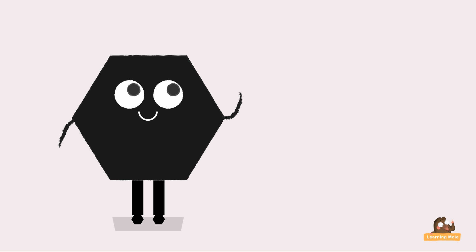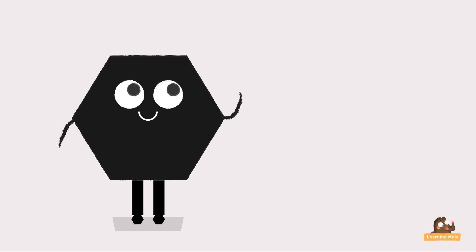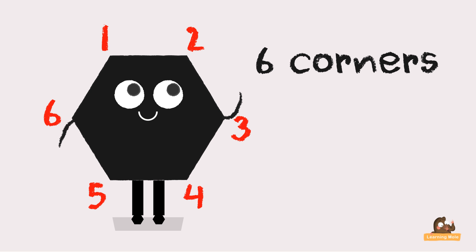How many sides does a hexagon have? You're right, it has six. Six. How many corners does a hexagon have? Super, it has six.